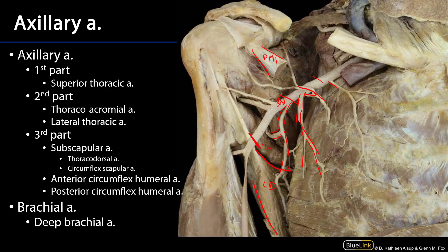The scapula is sort of a triangle — the circumflex scapular comes around one side, the dorsal scapular rides down another side, and the suprascapular comes down the other way. These three arteries provide rather extensive anastomoses about the scapula.